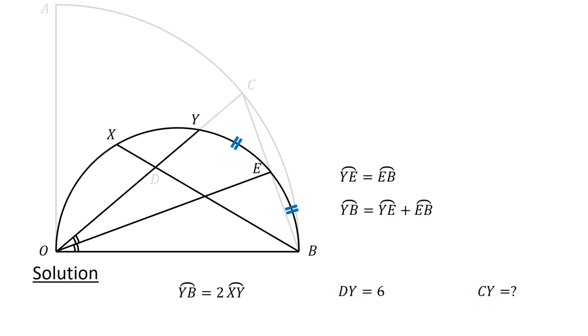Arc YB, which equals arc YE plus arc EB, equals 2 times arc YE. Since arc YB equals 2 times arc XY, we have 2 times arc XY equals 2 times arc YE, or arc XY equals arc YE.